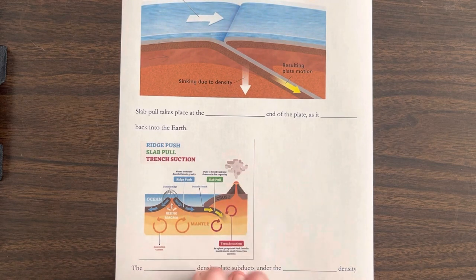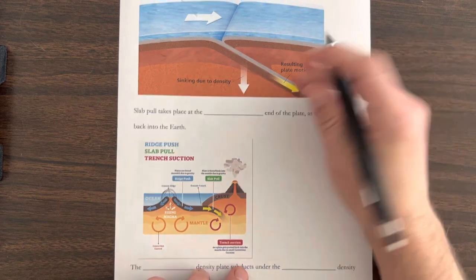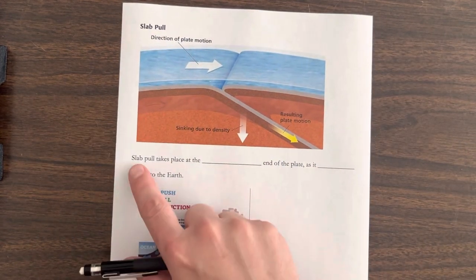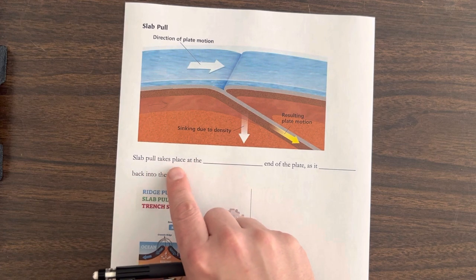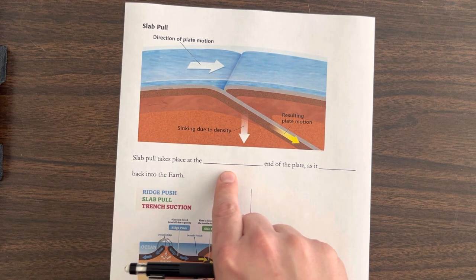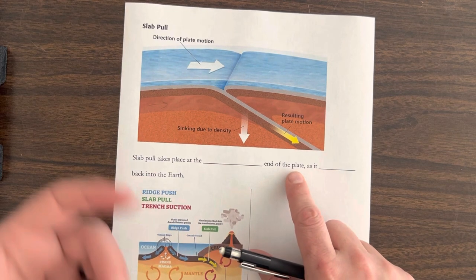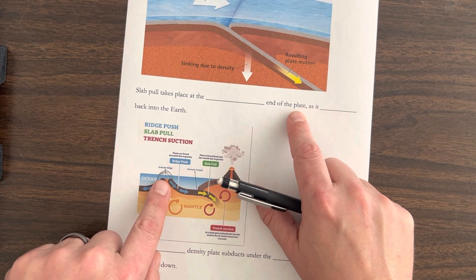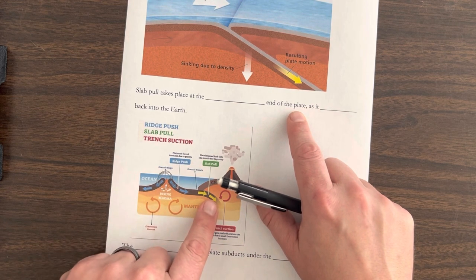And so this part of the crust pushes the rest of the plate. Now the final one is going to be slab pull. So slab pull takes place at the opposite end of the plate. And by the opposite end, I mean you can see the ridge push here at the opposite end is slab pull.